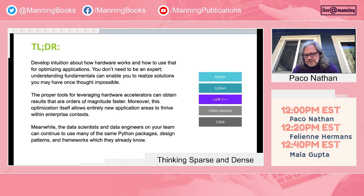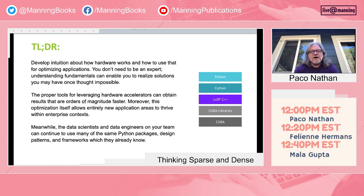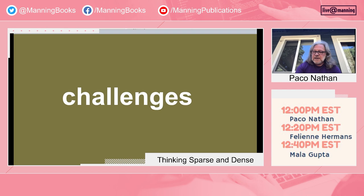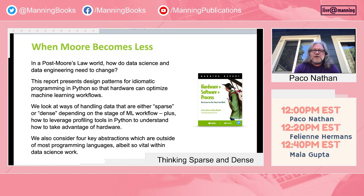And it doesn't imply a lot of changes for data scientists and data engineers — it's more about changing the process that's used, particularly continuous integration. From an engineering perspective, how can you set up better CI so that the data workflows in general work better? This is about a post-Moore's law world and what the implications are on data science and data engineering. The report goes into a lot more detail; the talk is just the tip of the iceberg.